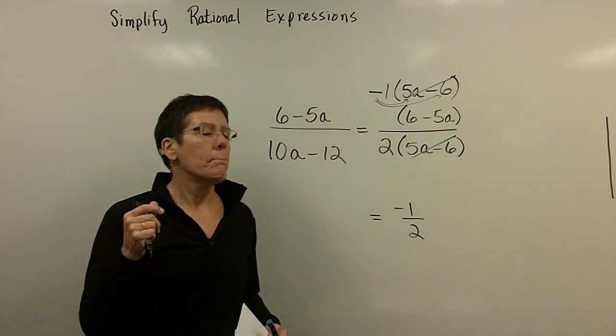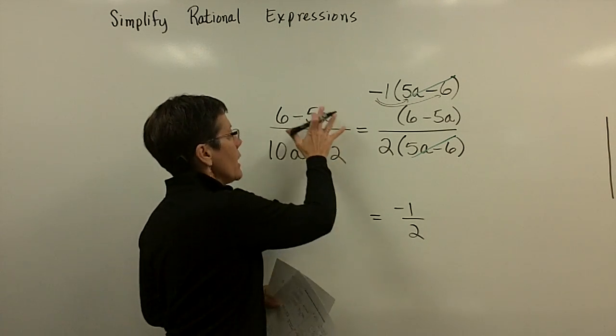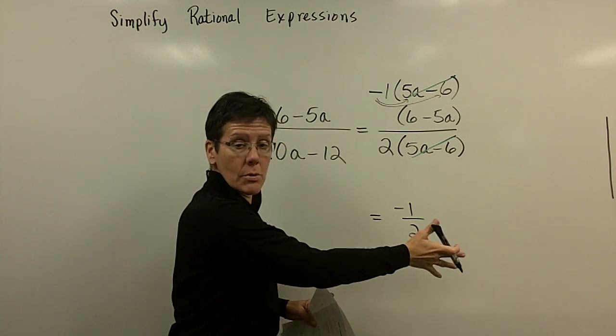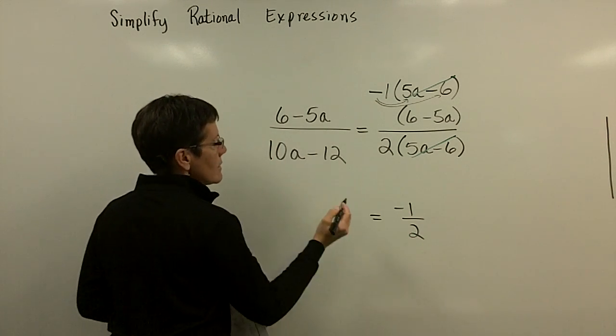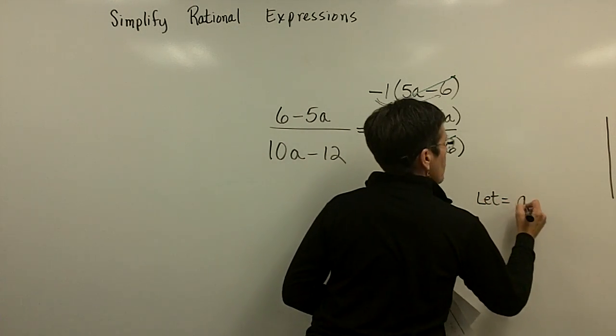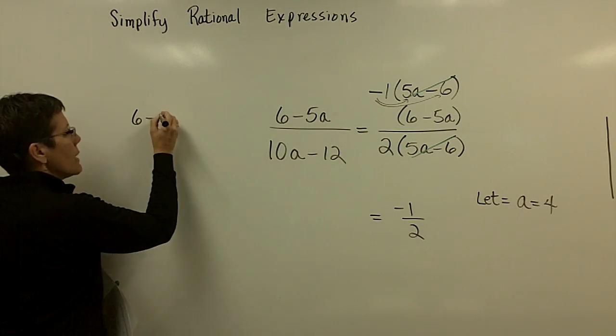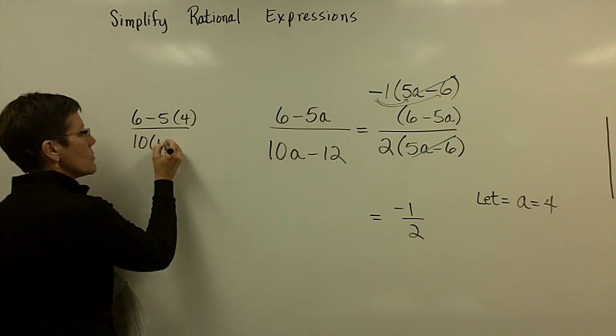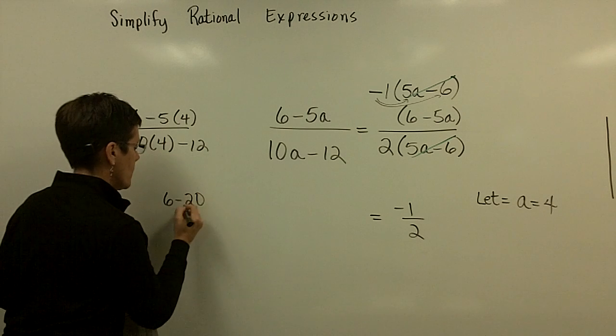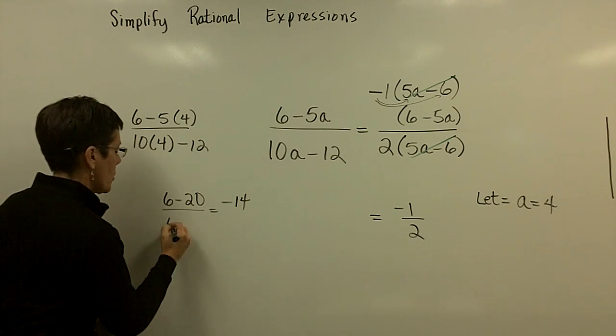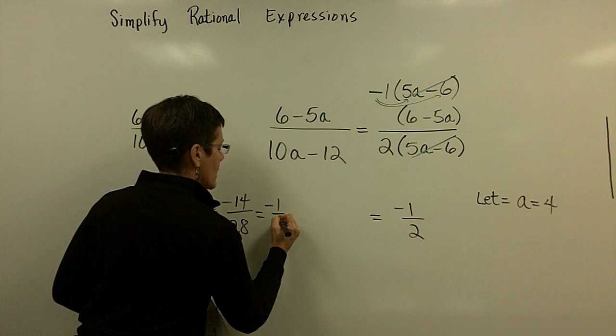I failed to mention that I could have a number that I could put in for a in the original expression. And no matter what, when I put that value in for a and I put it into my final output, I would get the same answer. Now, this one doesn't have any letters left in the results, but I just want you to know that let's say I let a, I don't know, equal the number 4. So, I'm going to come over here and I'm going to put a 4 in anywhere I see a. So, 6 minus 5 times 4. And down here, 10 times 4 minus 12. And using order of operations, I should multiply, so that's a 20. So, I have 6 minus 20, which is a negative 14. And down here, I have 40 minus 12, which is a positive 28. And when I reduce that fraction, I get a negative 1 half.